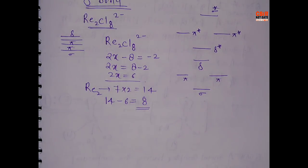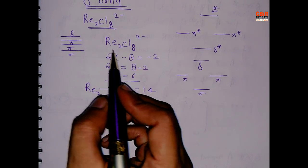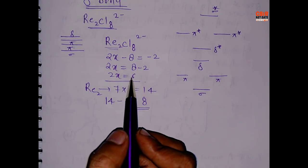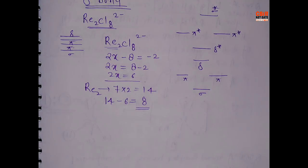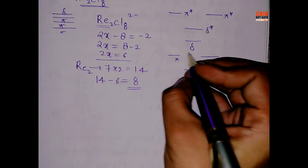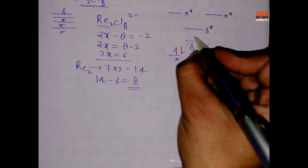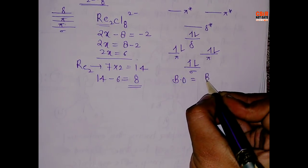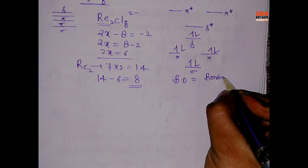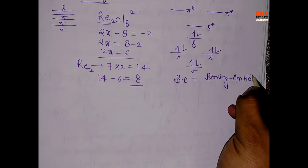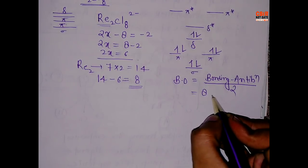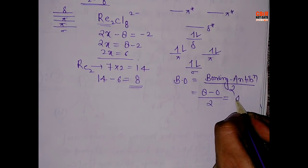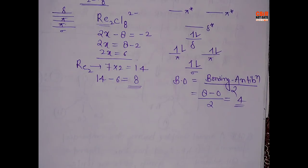So in Re₂Cl₈²⁻, the Re₂ unit has 8 electrons. Fill these 8 electrons into the diagram: 1, 2, 3, 4, 5, 6, 7, 8. Bond order = (bonding − anti-bonding) / 2 = (8 − 0) / 2 = 4. That means it has a delta bond.